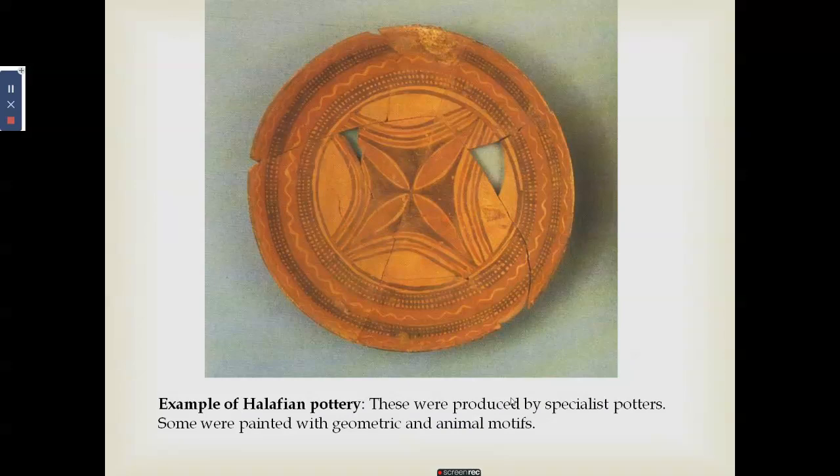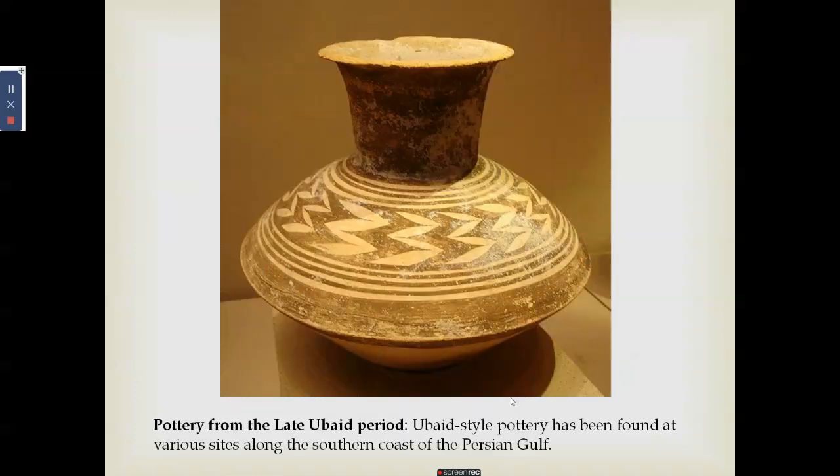Beyond storage pottery, plate and dish forms also appear — people were now thinking about functional vessels for consuming food and beverages. The Halafian pottery is associated with turkey, Syria, and northern Mesopotamia, while the Ubaid period pottery is from southern Mesopotamia. The sculpture of this period shows great change compared to earlier periods.